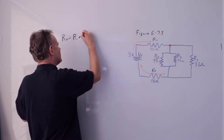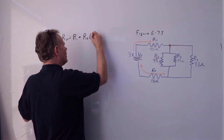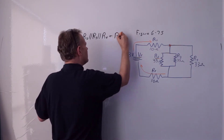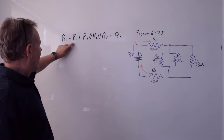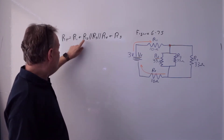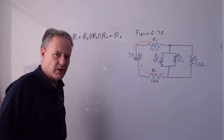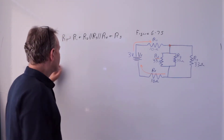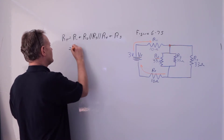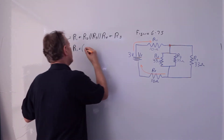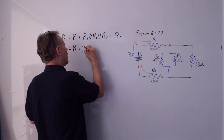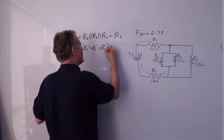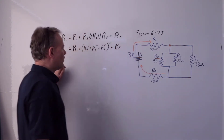So the full resistor notation is: RT = R1 + (R2 ‖ R3 ‖ R4) + R5. Those parallel symbols indicate a parallel relationship. Written as an equation: RT = R1 + (R2⁻¹ + R3⁻¹ + R4⁻¹)⁻¹ + R5. That's the total resistance formula using the reciprocal method.